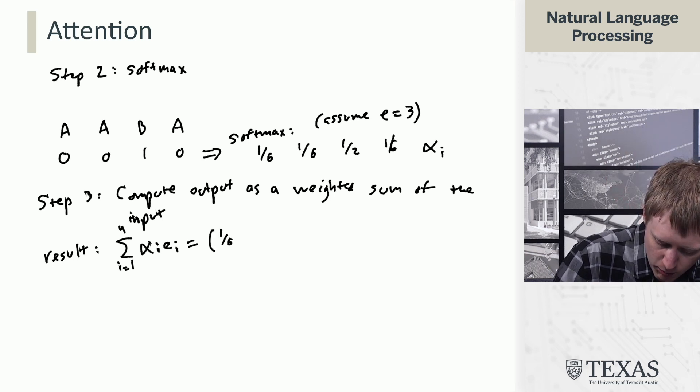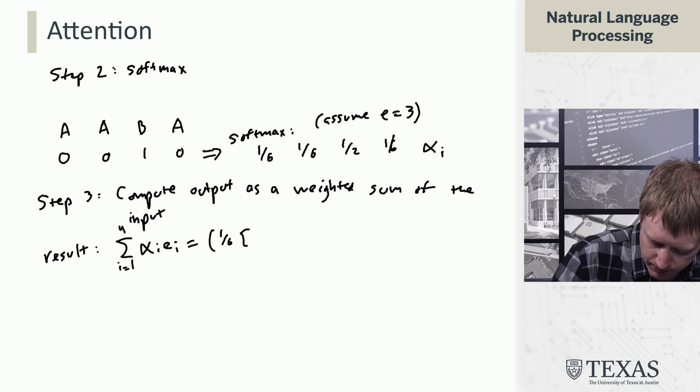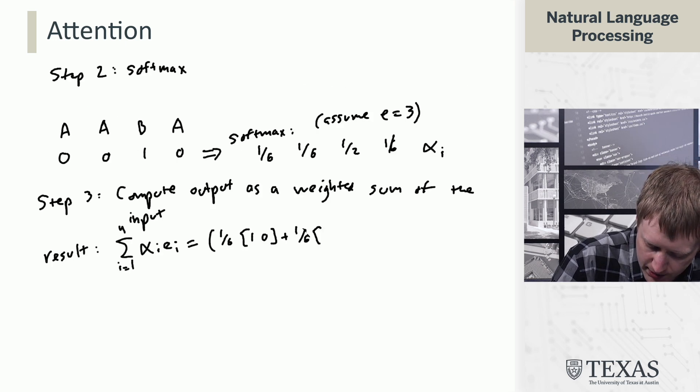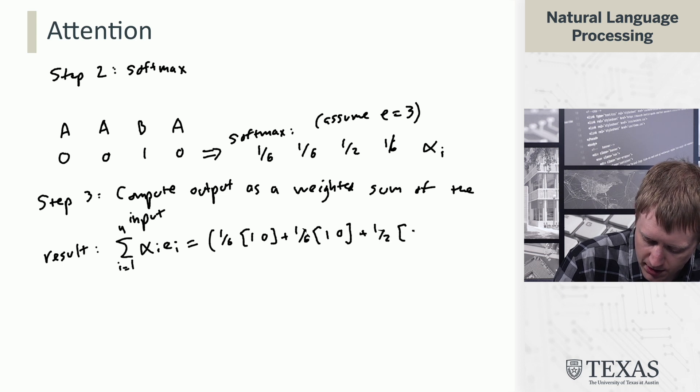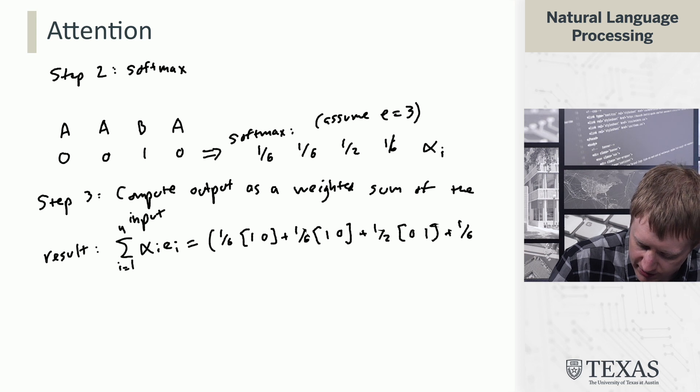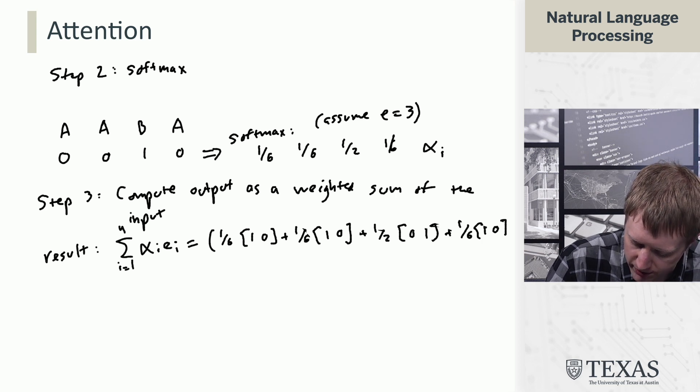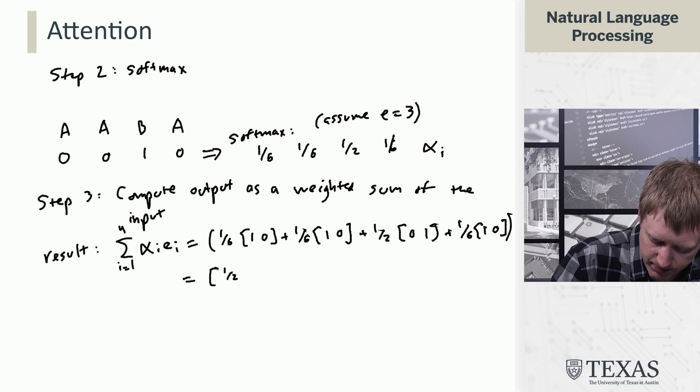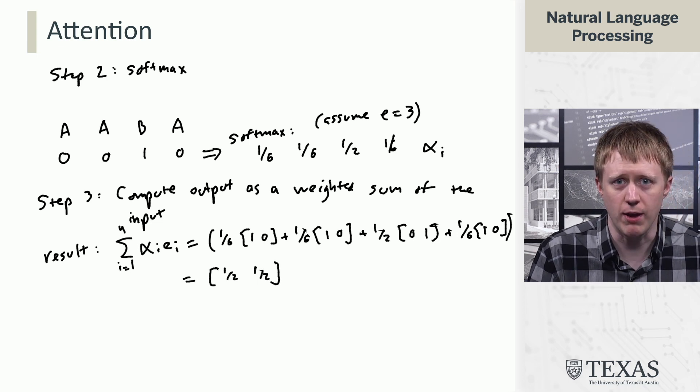So, basically, this is 1/6 times [1,0] plus 1/6 times [1,0] plus 1/2 times [0,1] plus 1/6 times [1,0]. Which ultimately gives us [1/2, 1/2].